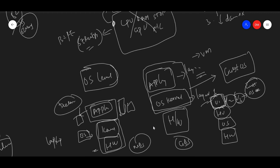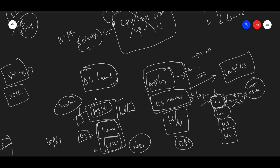Docker containers run much faster than VMs. If you have a VM it will take a lot of time to start, but a Docker container will start within seconds. That is one of the major advantages. Also, your VMs are always in GBs, while Docker images are always in MBs - so speed, size, and compatibility are all advantages.